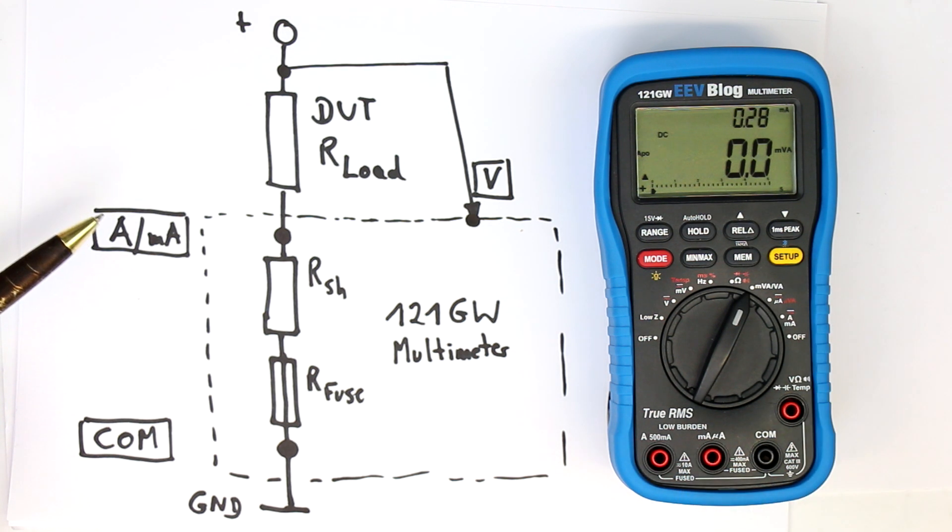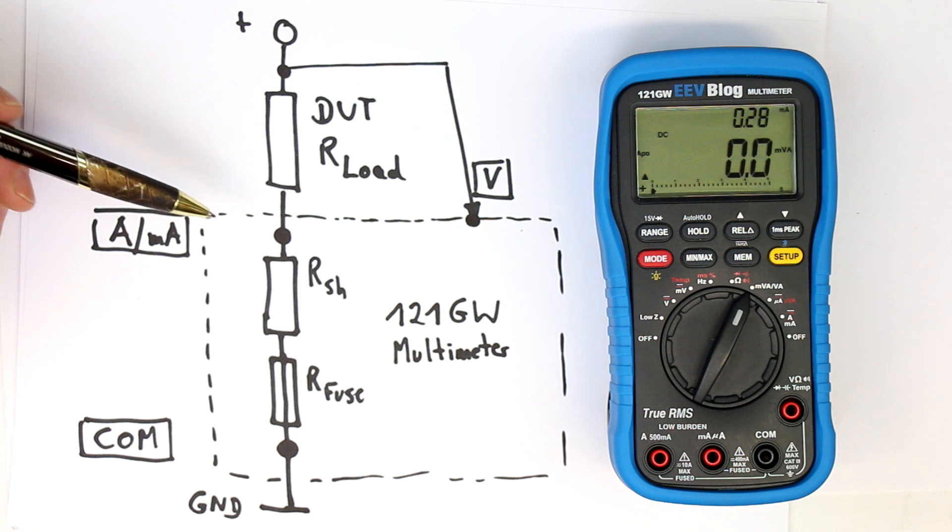Viewer Joe Smith noted that there is something wrong with the way the VA mode is implemented in the 121GW multimeter. For that I made a little drawing to show you the root of the problem and we will make some measurements to verify this. Joe Smith also supplied a very clever remedy to get away with the problem, but we'll come to that later.